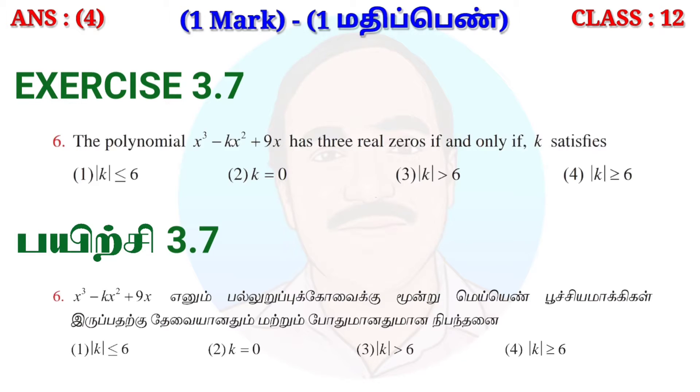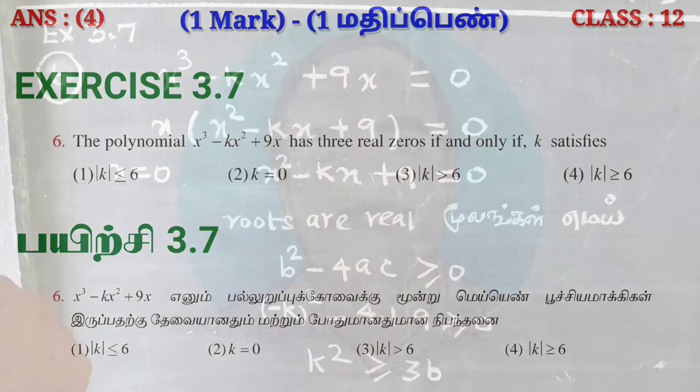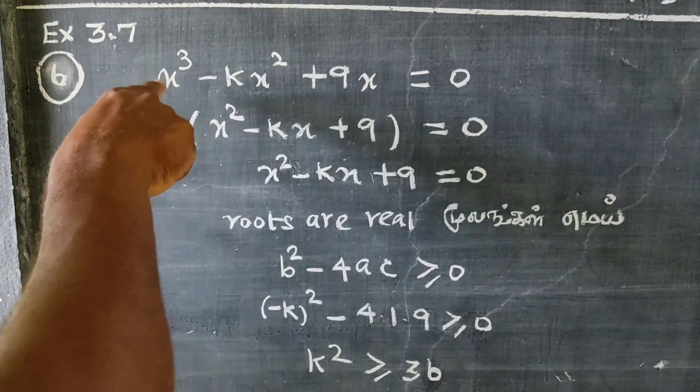x³ - kx² + 9x equals 0. Setting up the equation to find the necessary and sufficient condition for three real zeros.